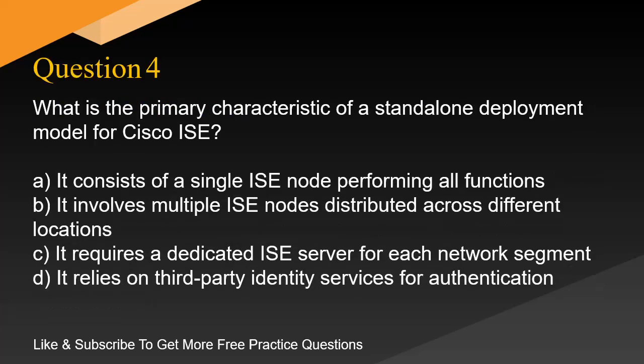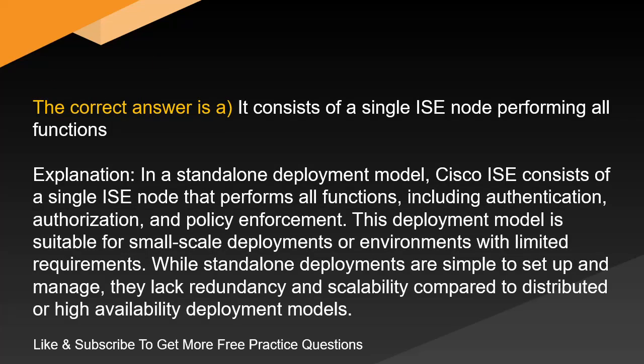Question 4. What is the primary characteristic of a standalone deployment model for Cisco ISE? A. It consists of a single ISE node performing all functions. B. It involves multiple ISE nodes distributed across different locations. C. It requires a dedicated ISE server for each network segment. D. It relies on third-party identity services for authentication. The correct answer is A. It consists of a single ISE node performing all functions.